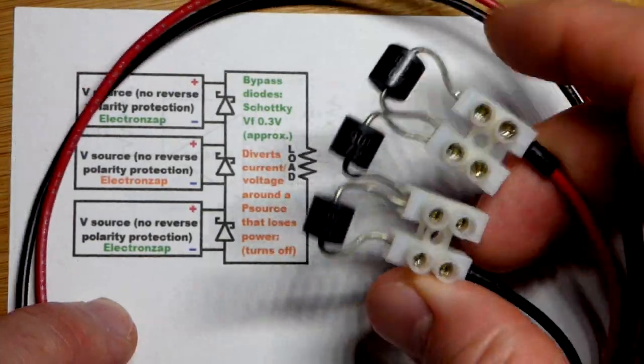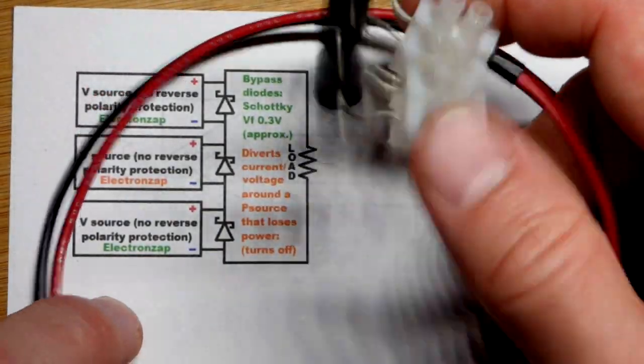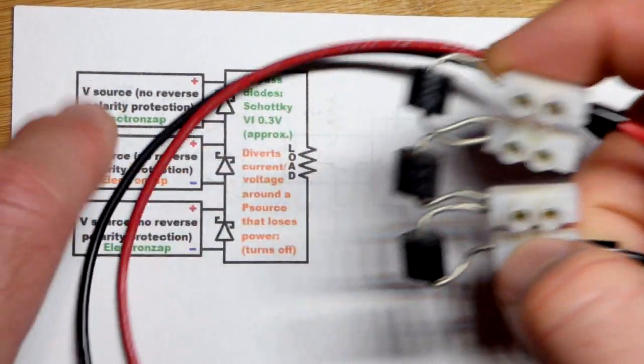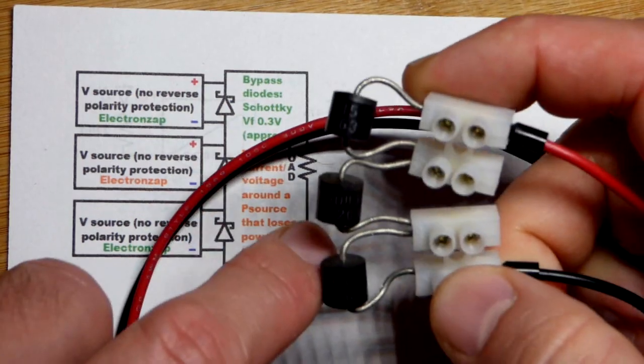So now in this video we're going to talk about bypass diodes. That's what I wired these up for. It looks like just three series diodes. They're actually Schottky diodes right there.